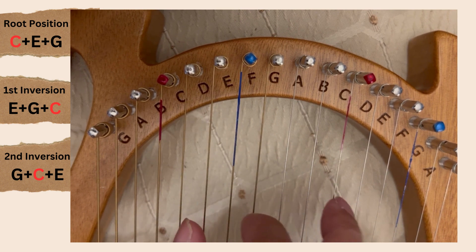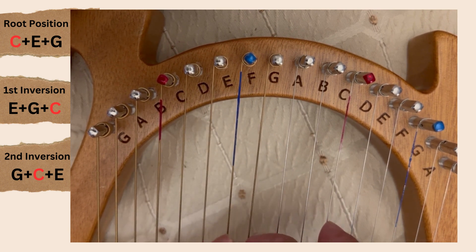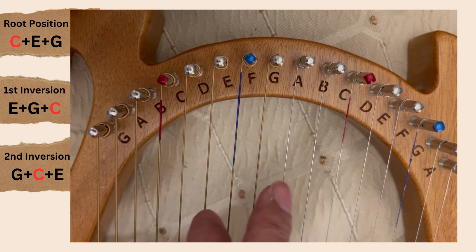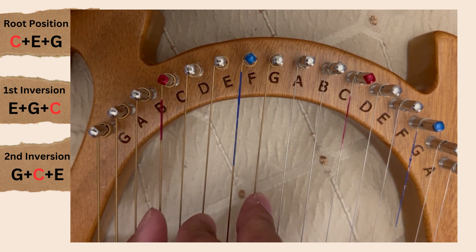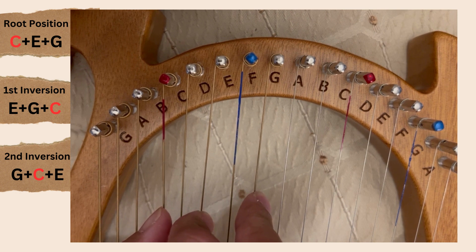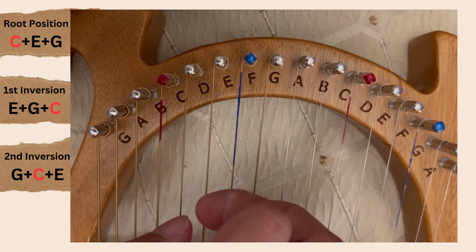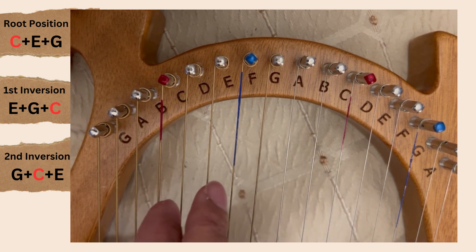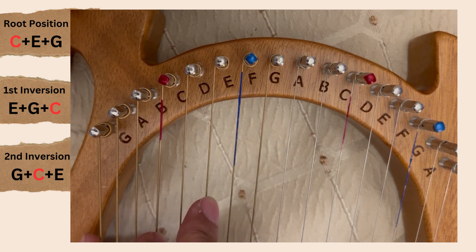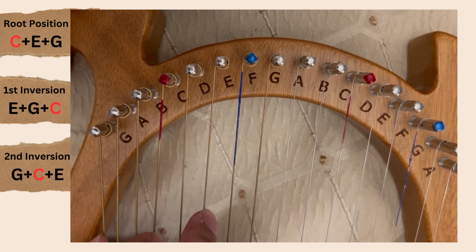So right now C is on the top, so I'm playing a second inversion C. If my melody note is a G, then I can add the other two notes that belong to that chord: C, E, G. And if my melody note is an E, then I can play the other two notes at the bottom.